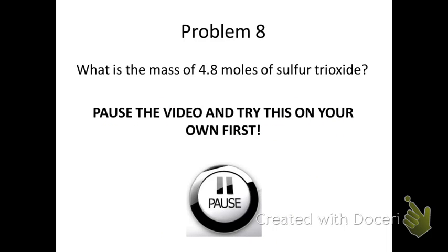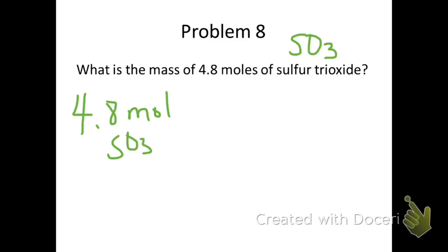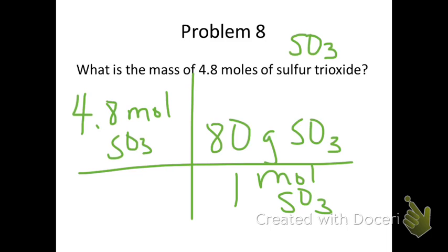Read number 8 and try it for yourself. Pause the video and then resume when you want to check your answer. In question 8, we are converting moles of sulfur trioxide to grams of sulfur trioxide. 4.8 moles is my given. Put moles in the bottom right and place grams with moles. One mole of SO3 is its molar mass, which is 80. Multiply the top, divide by the bottom, and you will get 380 grams of sulfur trioxide.